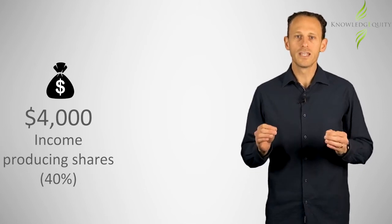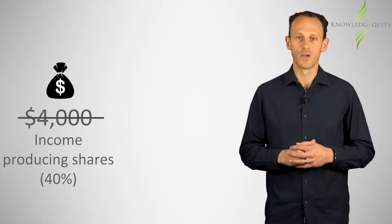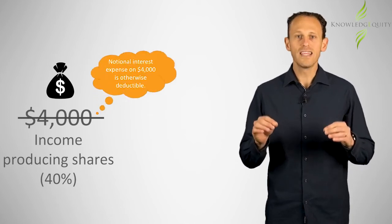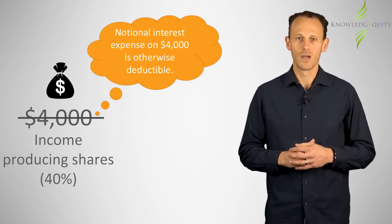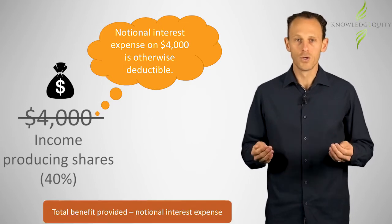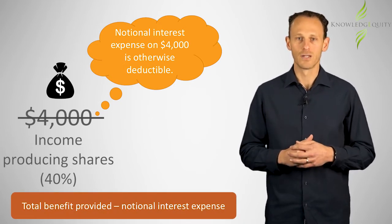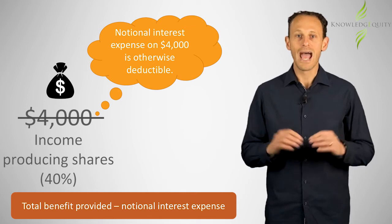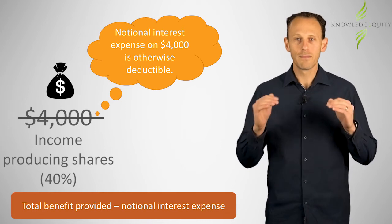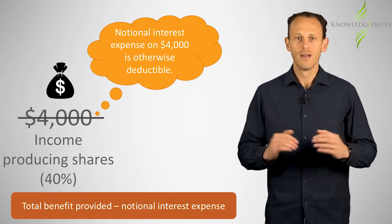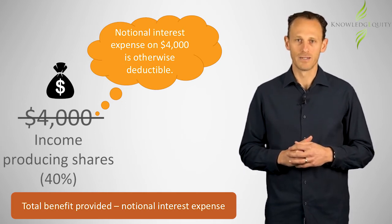Note that it is not $4,000 of the loan that is otherwise deductible. Only the interest expense on that $4,000 would be otherwise deductible. The notional interest expense on $4,000 of the loan at the statutory interest rate for the relevant FBT year would be subtracted from the total benefit provided.